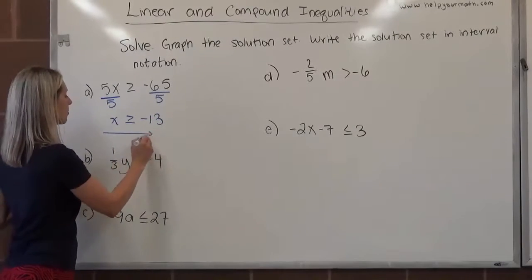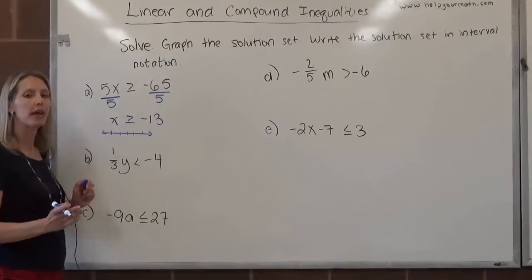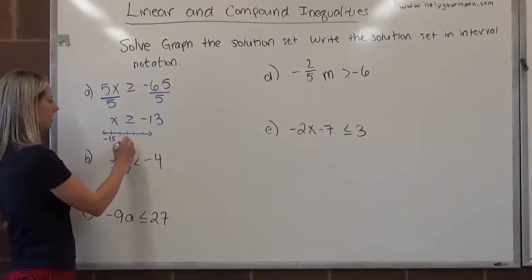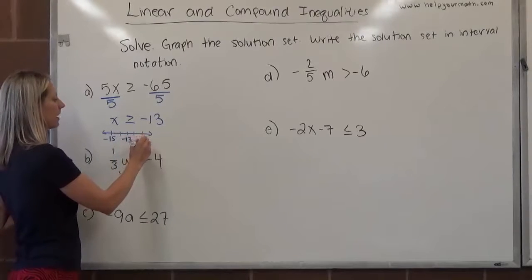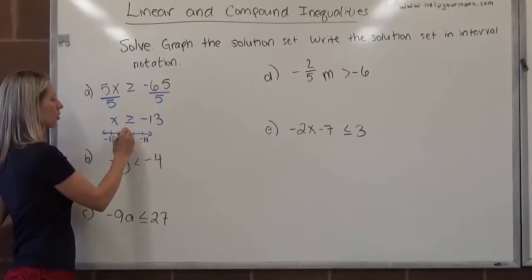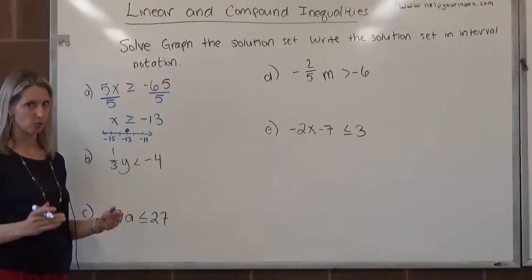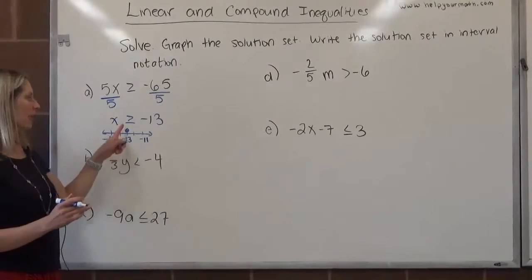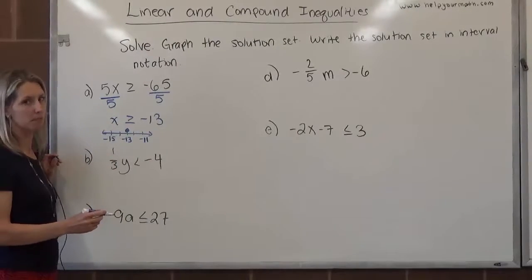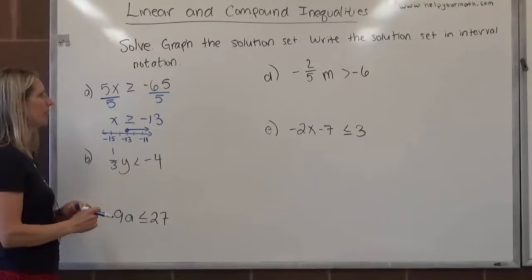On a number line, we would graph our solution set, so we need to make sure that somewhere on the number line that we draw, we include negative 13. Maybe I start here at negative 15 — negative 14, negative 13, negative 12, negative 11. Over negative 13, this is the start to the solutions. I put a closed circle to represent that negative 13 is itself a solution — that's the 'or equal to' taken care of. Numbers bigger than negative 13 are to the right, so I draw an arrow going to the right.